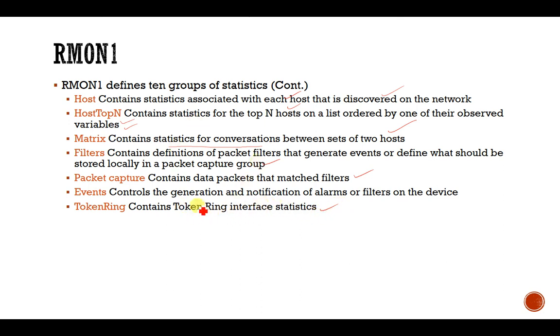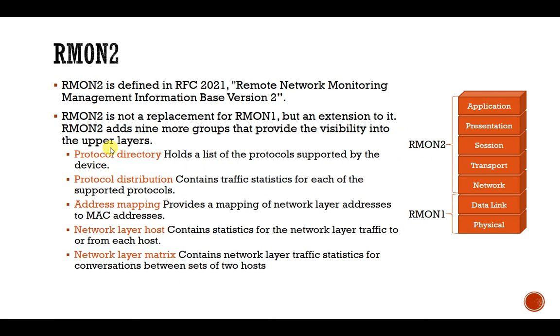These are the different types of information stored by RMON 1, and upon request the agent can transfer this data to the application layer.